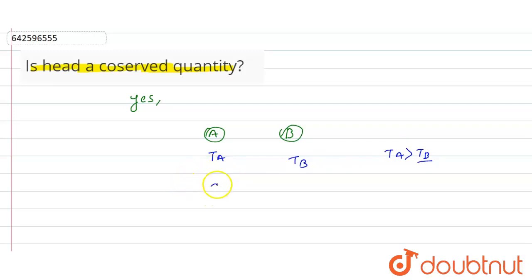when the bodies are in contact, A will lose heat and B will gain the heat. Heat lost by A,